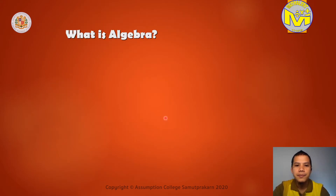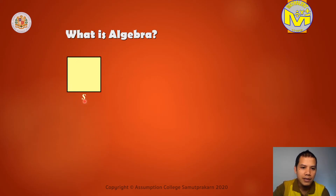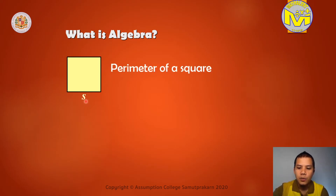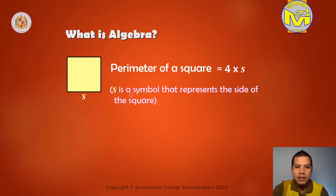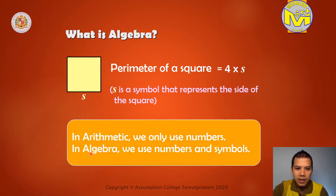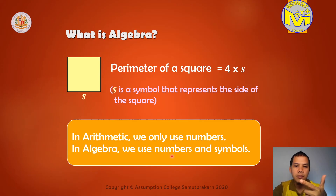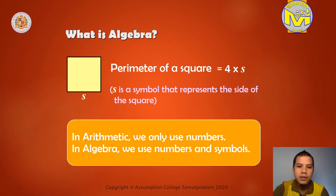What is algebra? Again, look at the square. We have S. What is this S? S represents the side of the square. So what is the perimeter of the square? The same thing — we multiply by 4. 4 times S is 4S. S is a symbol that represents the side of the square. This is the meaning of algebra. In algebra, we use numbers and symbols. In arithmetic, we have only numbers.